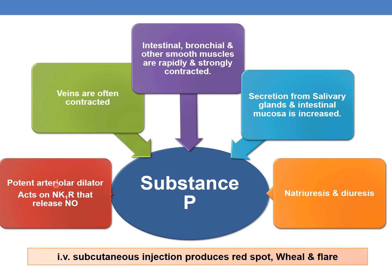Substance P is a potent arteriolar dilator. It acts on NK1 receptors leading to release of nitric oxide which relaxes the smooth muscle. Veins are directly contracted, causing venoconstriction. Intestinal, bronchial, and other smooth muscles are rapidly and strongly contracted. Secretions from salivary glands and intestinal mucosa are increased. When acting on kidneys, it leads to natriuresis and diuresis. Intravenous or subcutaneous injection of Substance P produces a red spot, wheal, and flare due to local vasodilation.